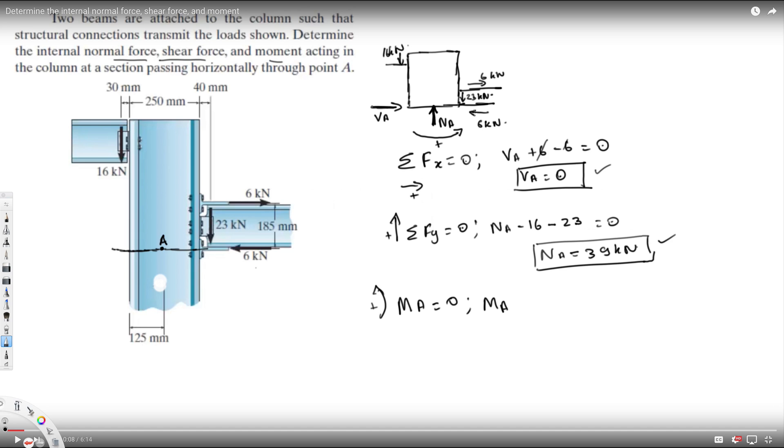Moment around A is equal to zero. If I take counterclockwise positive, Ma plus we have 16 kilonewton acting counterclockwise, so it's positive 16 times the distance. The distance is 125 plus 30, so 155 millimeters, which is 0.155 meters.